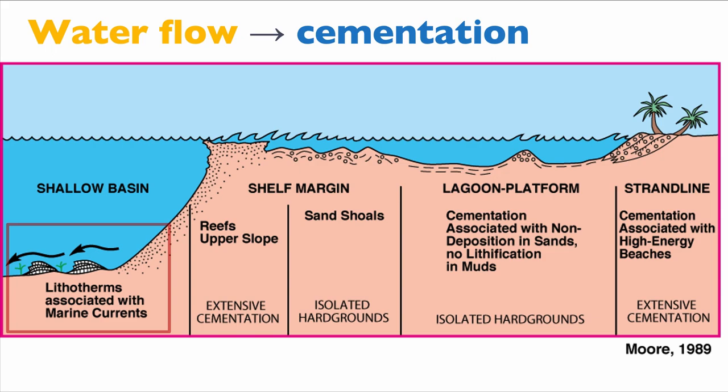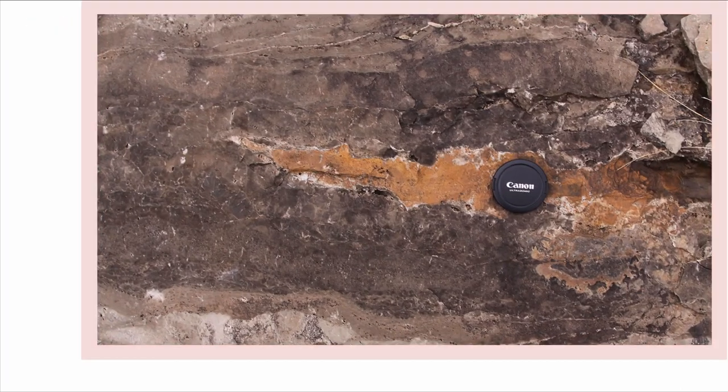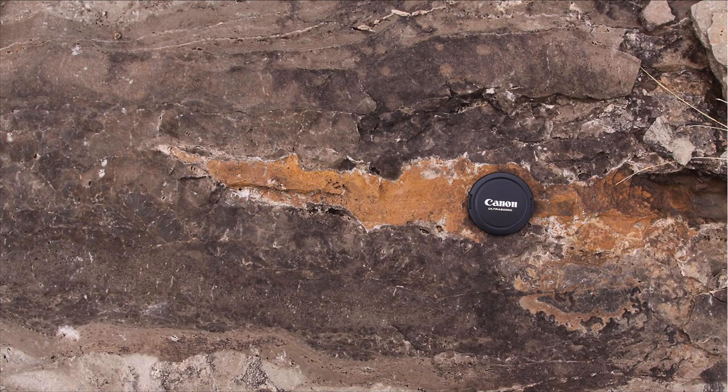Let's review the shallow marine environment and talk about the type of diagenetic transformations we can have there and what the pump is for these transformations. In a shallow basin, we can have current circulation that leads to diagenetic transformation. But in shallow water settings, especially around the reef, we have a lot of wave action, which is a pump for fluid. The water-rock ratio is high because wave action moves water through the reef, and that leads to extensive cementation.